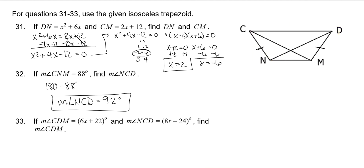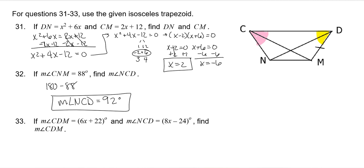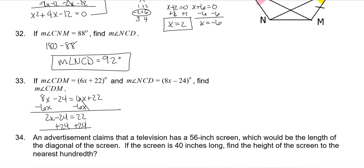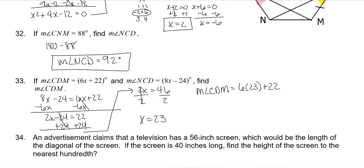Angle CDM and angle NCD are congruent, so set them equal: 8X minus 24 equals 6X plus 22. Subtract 6X on both sides: 2X minus 24 equals 22. Add 24 to both sides: 2X equals 46. Divide by 2: X is 23. Plug back in to find CDM: 6 times 23 plus 22 is 138 plus 22, so the measure of angle CDM is equal to 160 degrees.